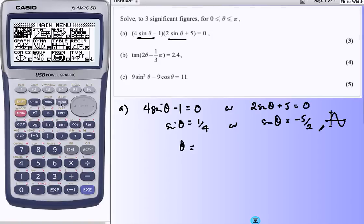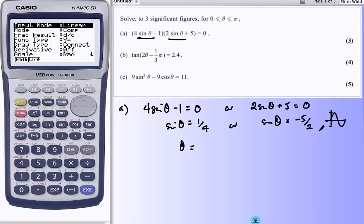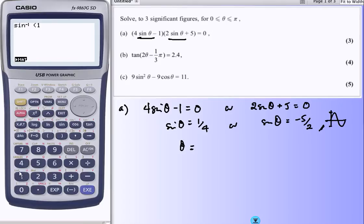Go to the calculator, and before I do anything else, I'll just check that I'm in radians, I am. And so, inverse sine of 1/4, 0.253.